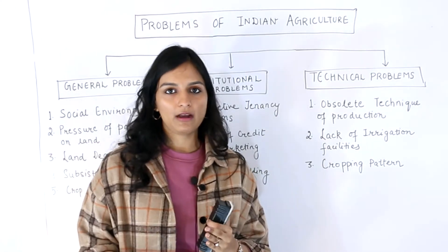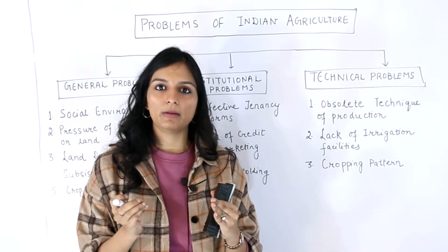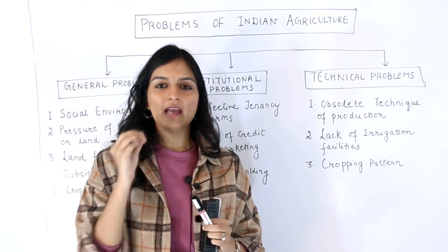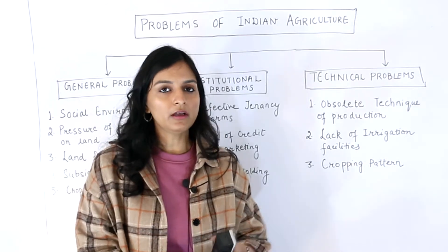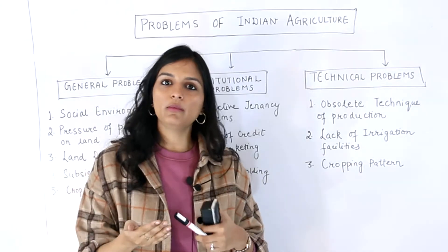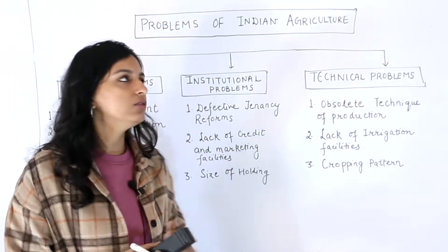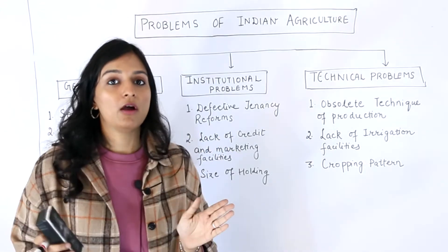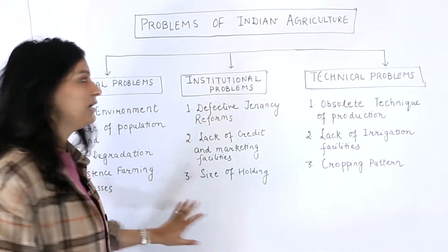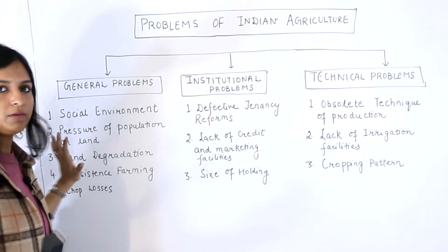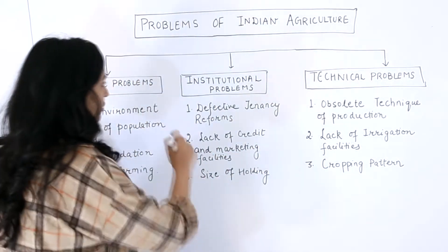In the previous video, we saw why the agriculture sector is so important for the Indian economy — how agriculture is given importance. But at the same time, there are also problems in the agriculture sector. We have categorized these problems into general problems, institutional problems, and technical problems.